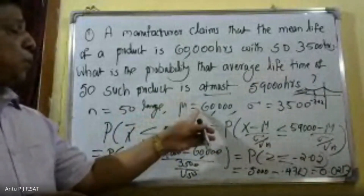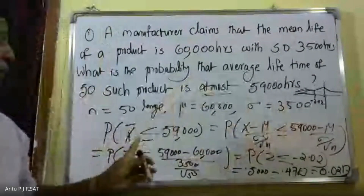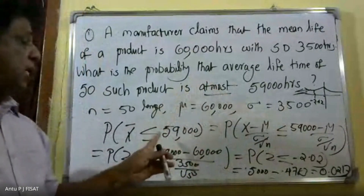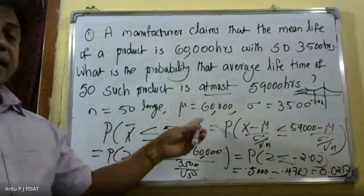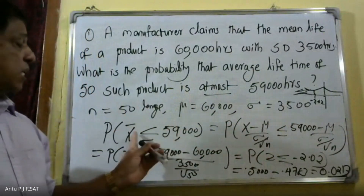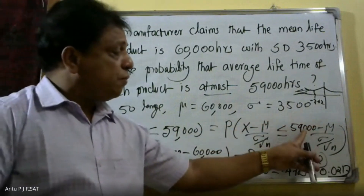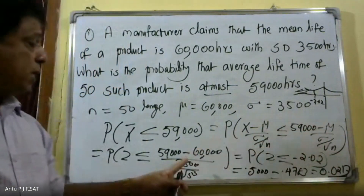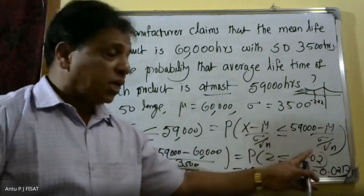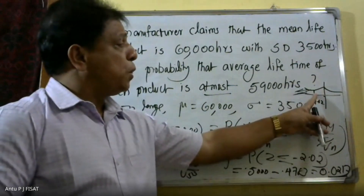To summarize: the population mean is 60,000 and the standard deviation is 3,500. The probability of X-bar less than or equal to 59,000 is found by converting to Z: (59,000 minus 60,000) divided by (3,500 divided by root 50), giving minus 2.02.